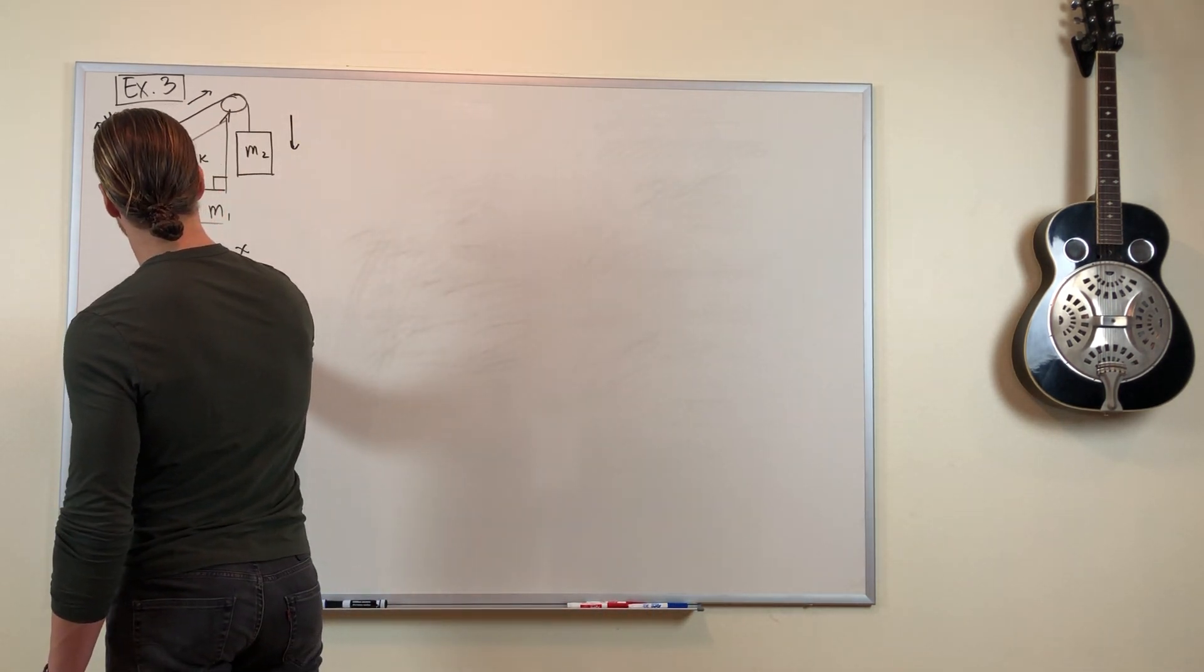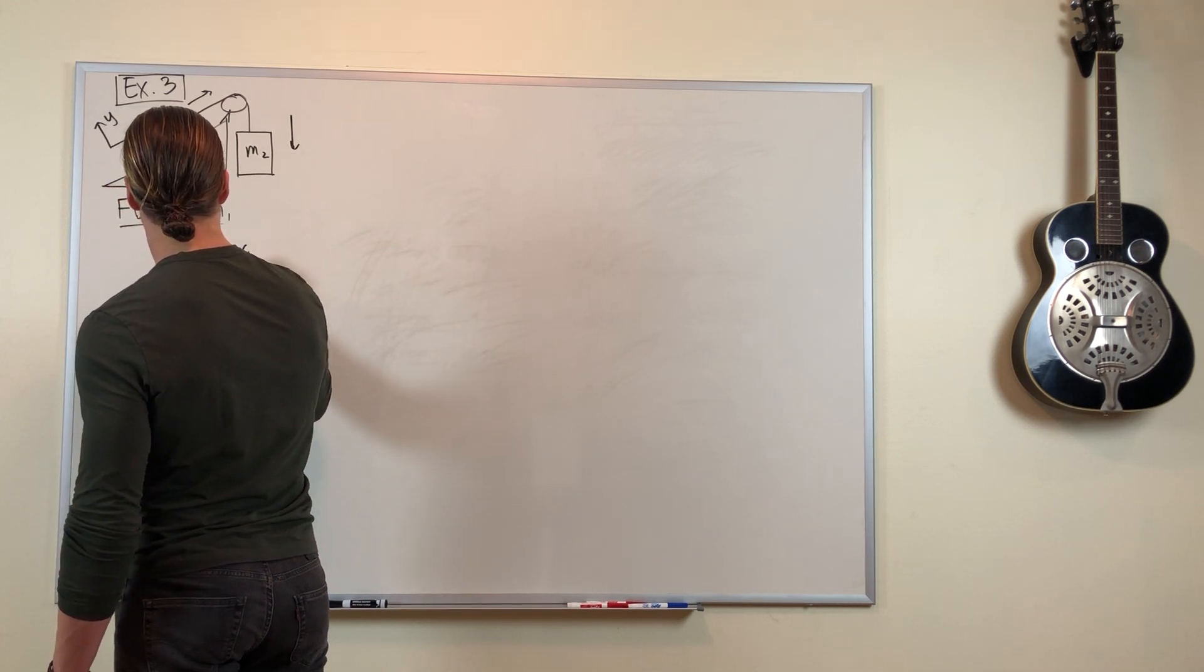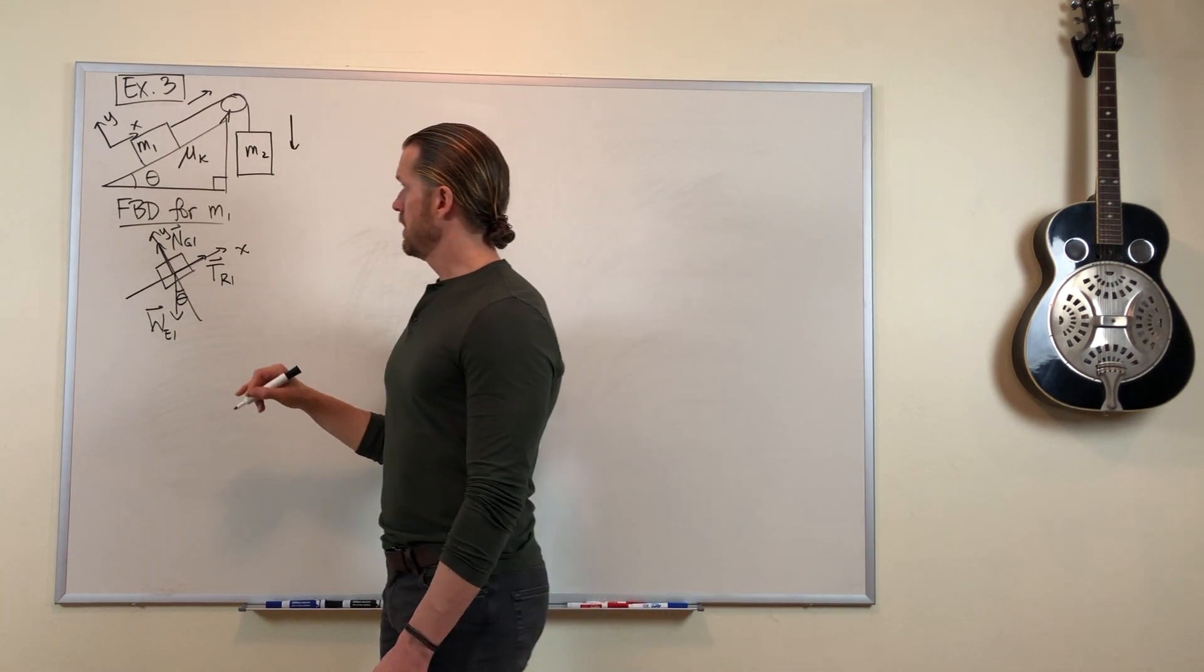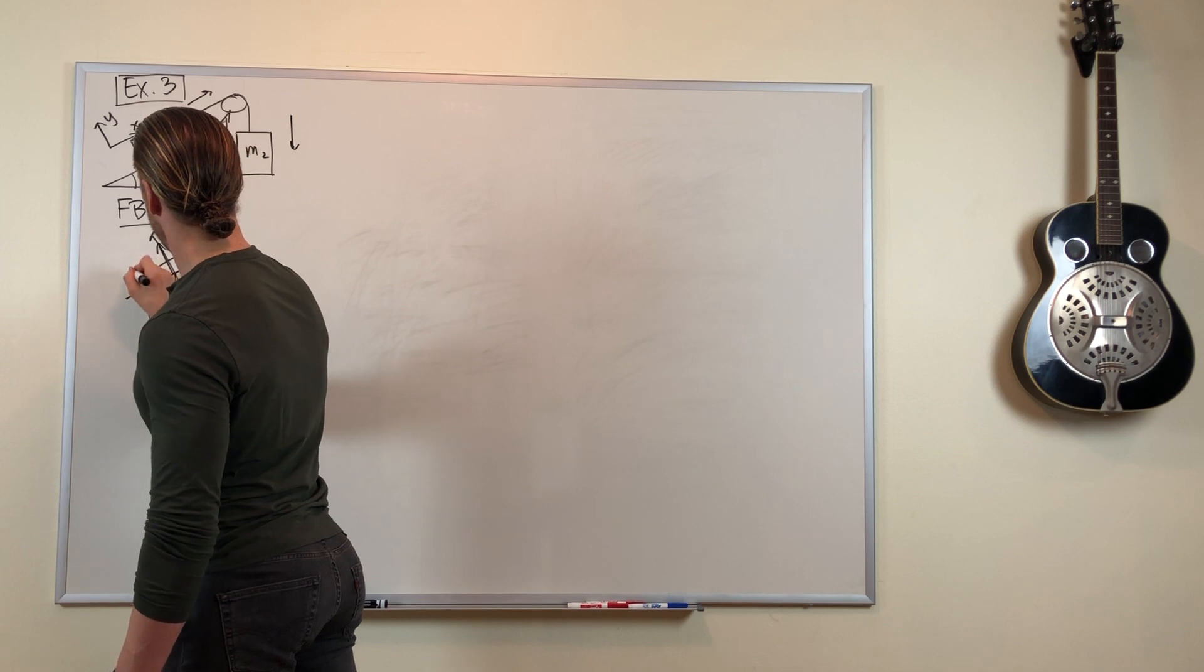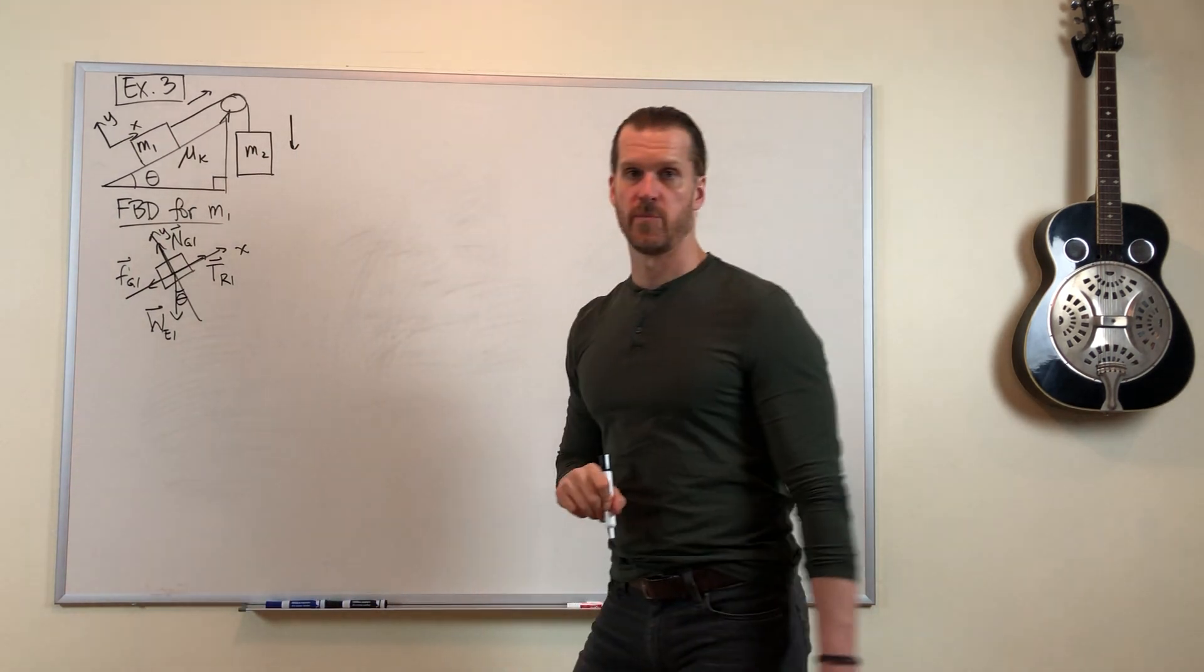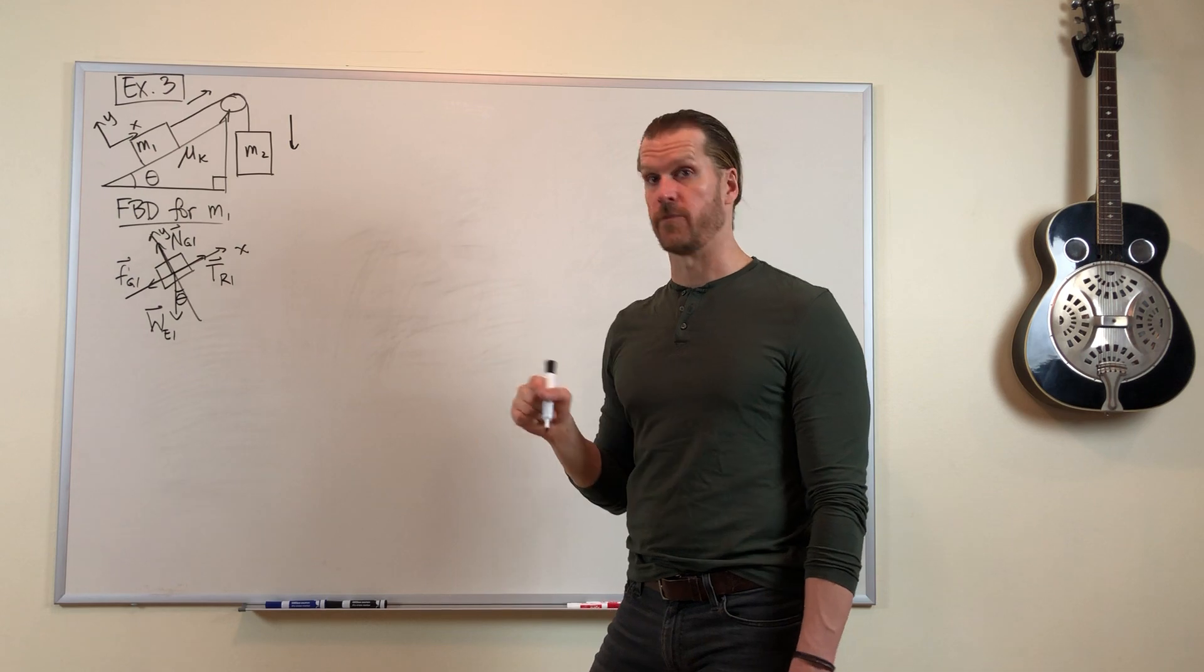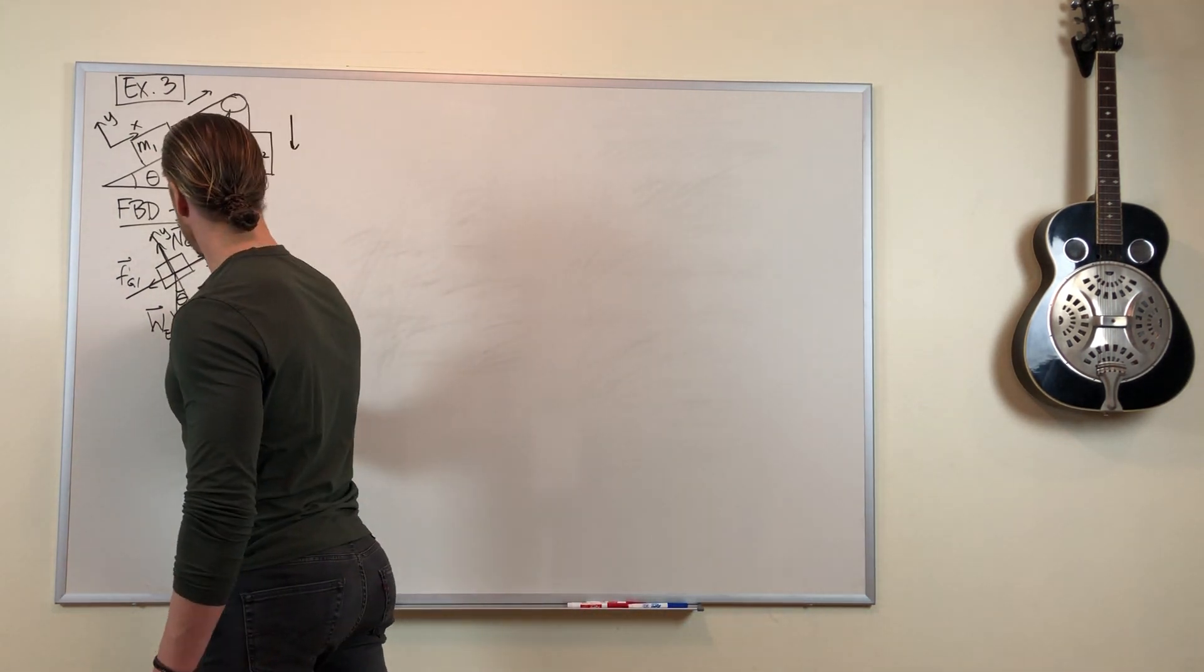There is the tension force of the rope on mass 1. And there's friction force, which opposes the motion. So friction of the ground on mass 1 is opposite to its motion. It's going up the slope, so friction goes down the slope.